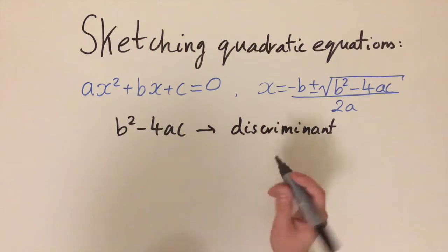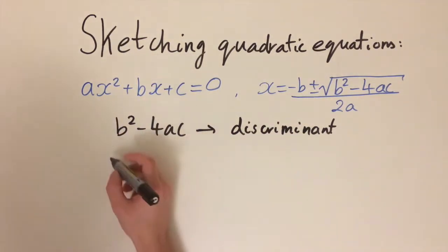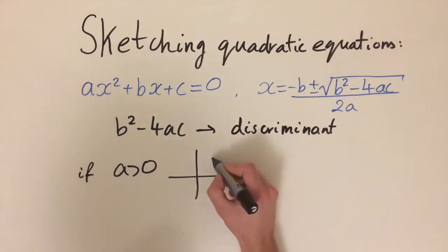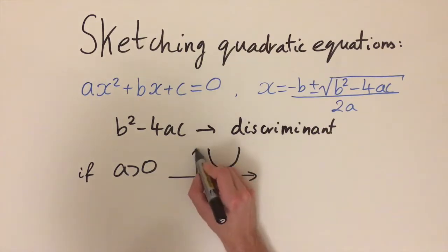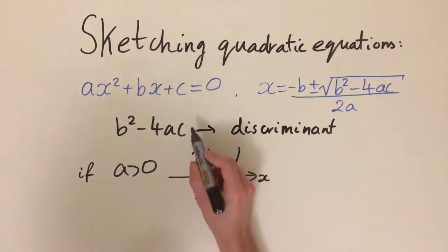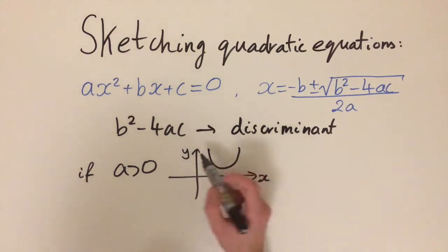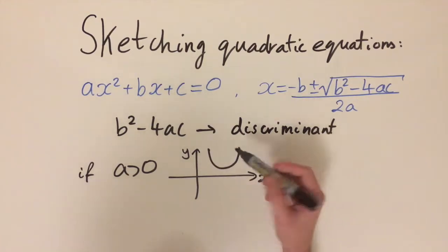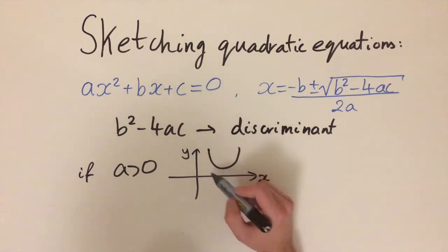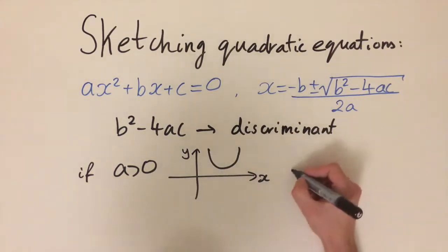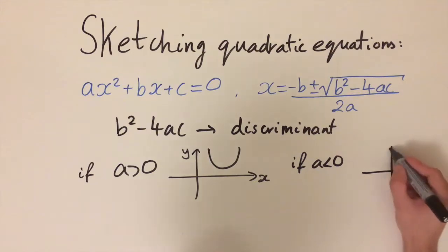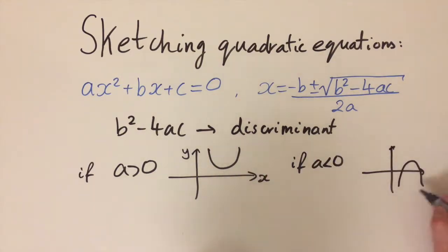We need to know what the graph looks like depending on the coefficient a. If a is greater than zero, we get a curve called a parabola — plotting x on the x-axis and y on the y-axis. This parabola has tails going off to infinity and curves upwards. If a is negative, the graph just flips the other way.